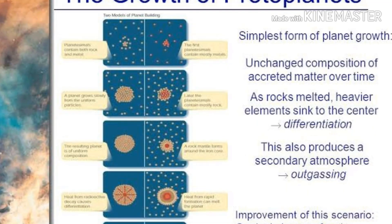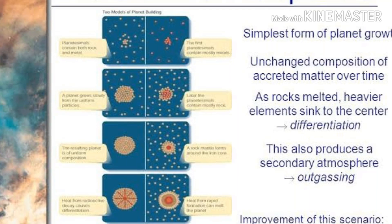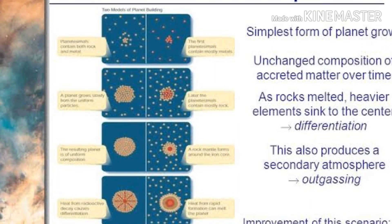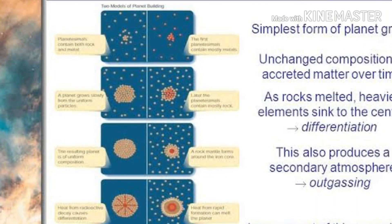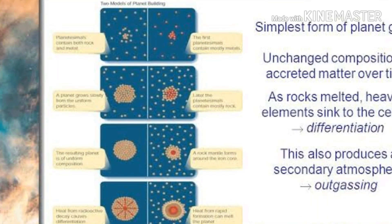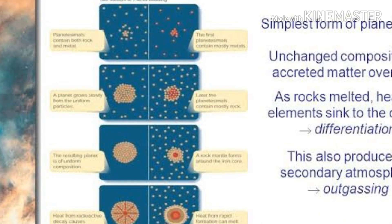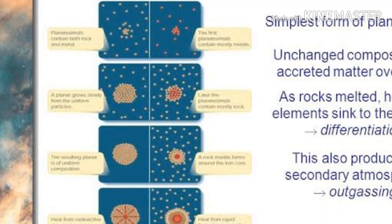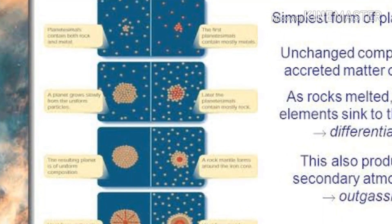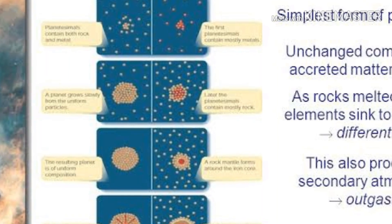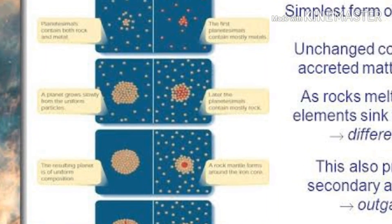Growth of protoplanet: in its simple form, planet growth involves an unchanged composition of the created matter over time. As rock melted, heavier elements sink to the center — a process called differentiation. This also produces a secondary atmosphere through outgassing. An improvement of this scenario involves the gradual change of grain composition due to cooling of the nebula and storing of heat from potential energy.